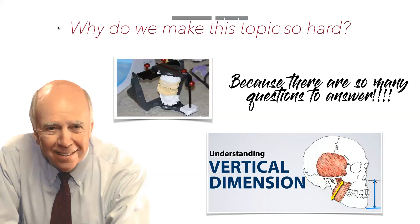Think about who we take study models on. We're not really ever taking study models on people that have really good teeth — we're usually taking impressions of people's teeth that are usually really poor. And then we throw them on an articulator. Usually if you hand a dentist a complicated-looking case on an articulator, the first thing they start asking is, 'Oh my gosh, what are we going to do with the vertical dimension? Are we opening the vertical dimension? Are we maintaining it? I think I need room to restore.'